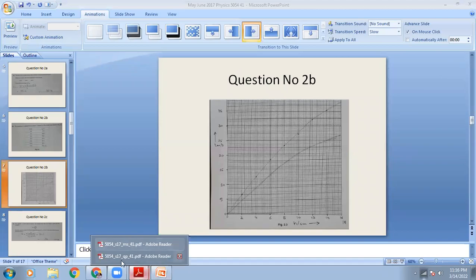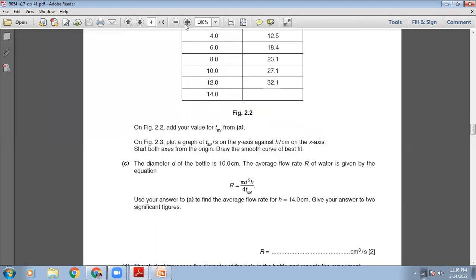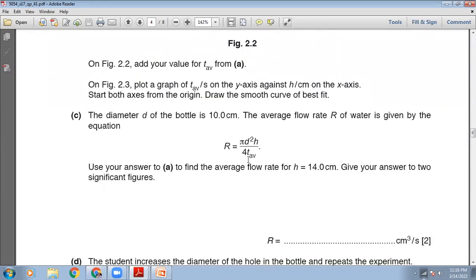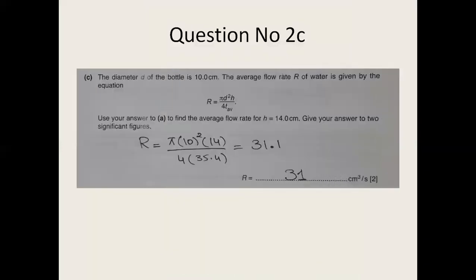The diameter d of the bottle is 10 centimeters. The average flow rate R is given by the equation R = πd²h / (4 × T_average). Use your answer from part (a) to find the average flow rate for H = 14 centimeters, giving the answer to two significant figures. Putting in the values: π × 10² × 14 divided by 4 divided by 35.4 equals 31.1, which rounded to two significant figures gives 31 cm³/s.